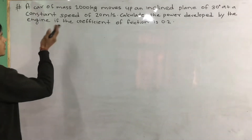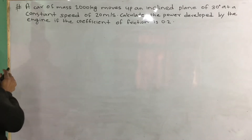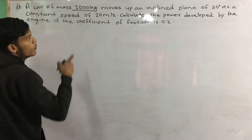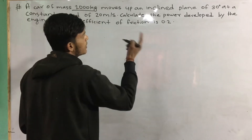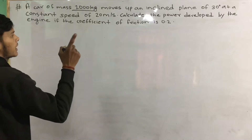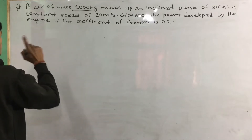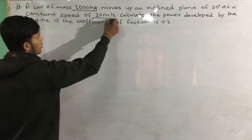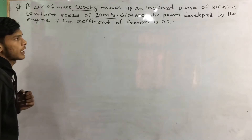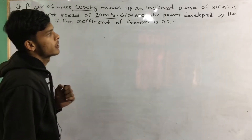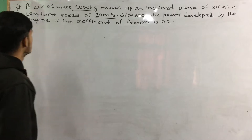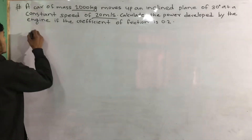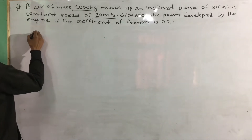A car of mass 1000 kg moves up an inclined plane of 30 degrees at a constant speed of 20 meters per second. Calculate the power developed by the engine if the coefficient of friction is 0.2.